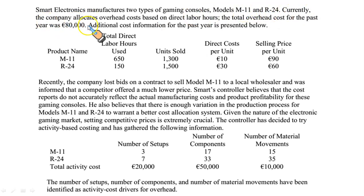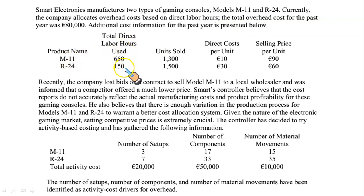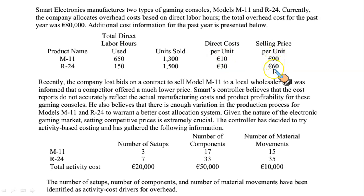Currently the company allocates overhead costs based on direct labor hours. The total overhead cost for the past year was 80,000 euros. Additional cost information for the past year is presented for model M11 and R24, including labor hours, units sold, direct costs (material and labor), and selling prices of 90 and 60 euros respectively.